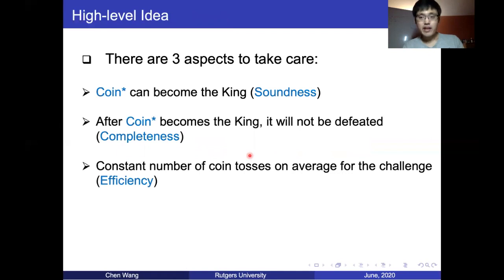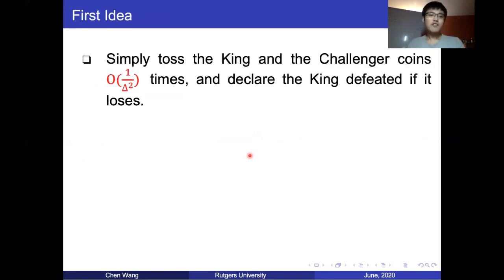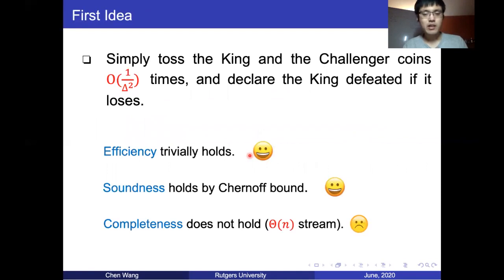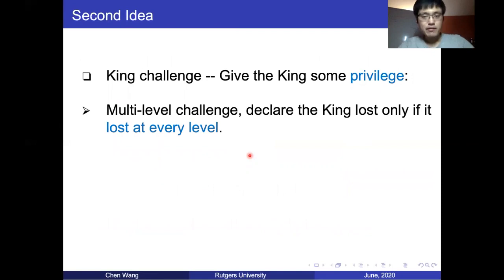There are always three aspects to consider for the one-coin algorithm: soundness — coin* has to become the king; completeness — after coin* becomes the king, it should not be defeated; and efficiency — the number of coin tosses cannot be too large. Our first idea is to toss each coin only a constant number of times and declare the loser defeated. This bounds efficiency well, and soundness holds by a Chernoff bound argument. But completeness is problematic: if coin* becomes king first, it only has a constant probability to defend the throne against a stream of length Θ(n), so eventually it will lose.